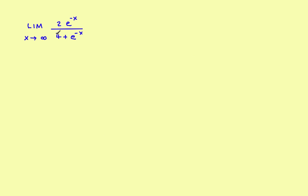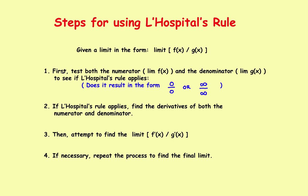Let's take a look at the sample problem. Suppose you had the limit as x approaches infinity of 2e to the negative x divided by 4 plus e to the negative x. If you follow the steps, the first step says you have to test both the numerator and denominator to see if they result in one of these two indeterminate forms — either 0 divided by 0, or infinity divided by infinity. If it does, then L'Hopital's rule applies, you move on to step 2, and go through the rest of the problem.